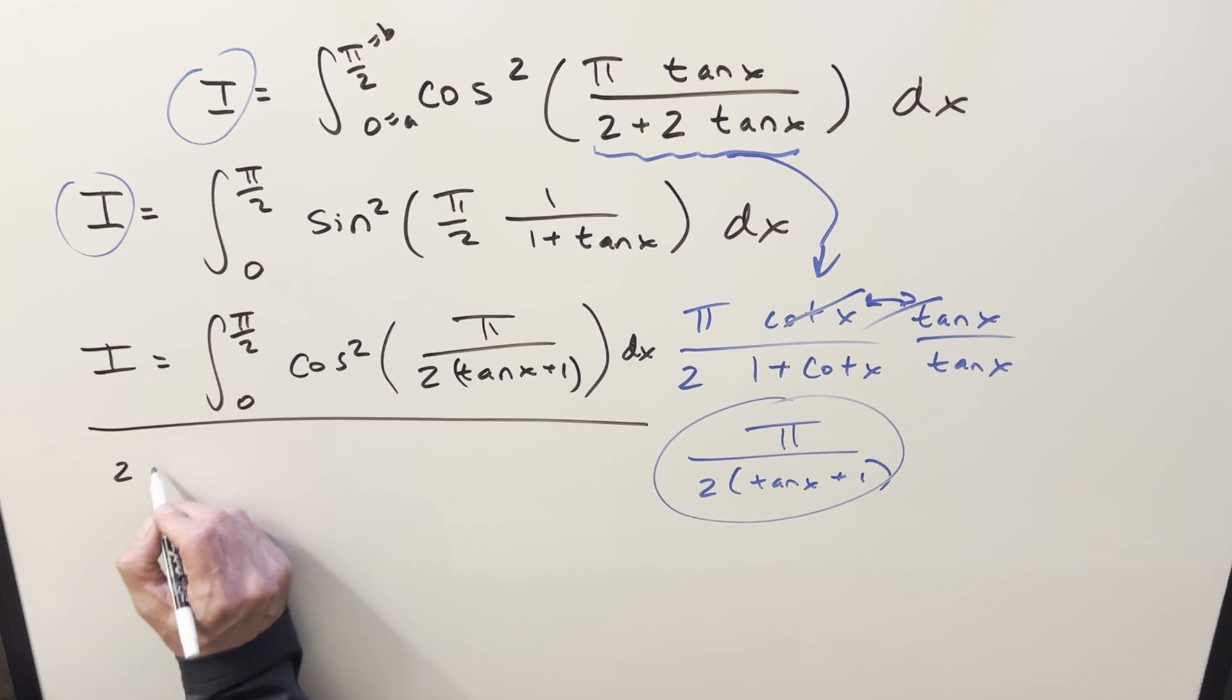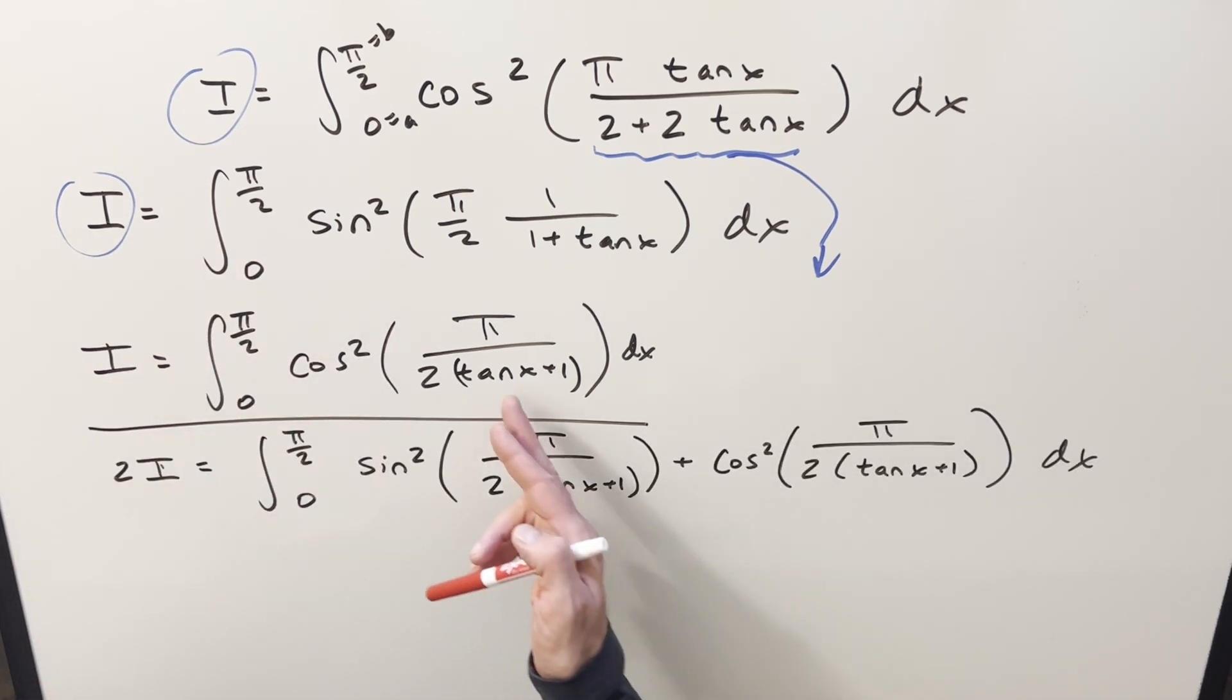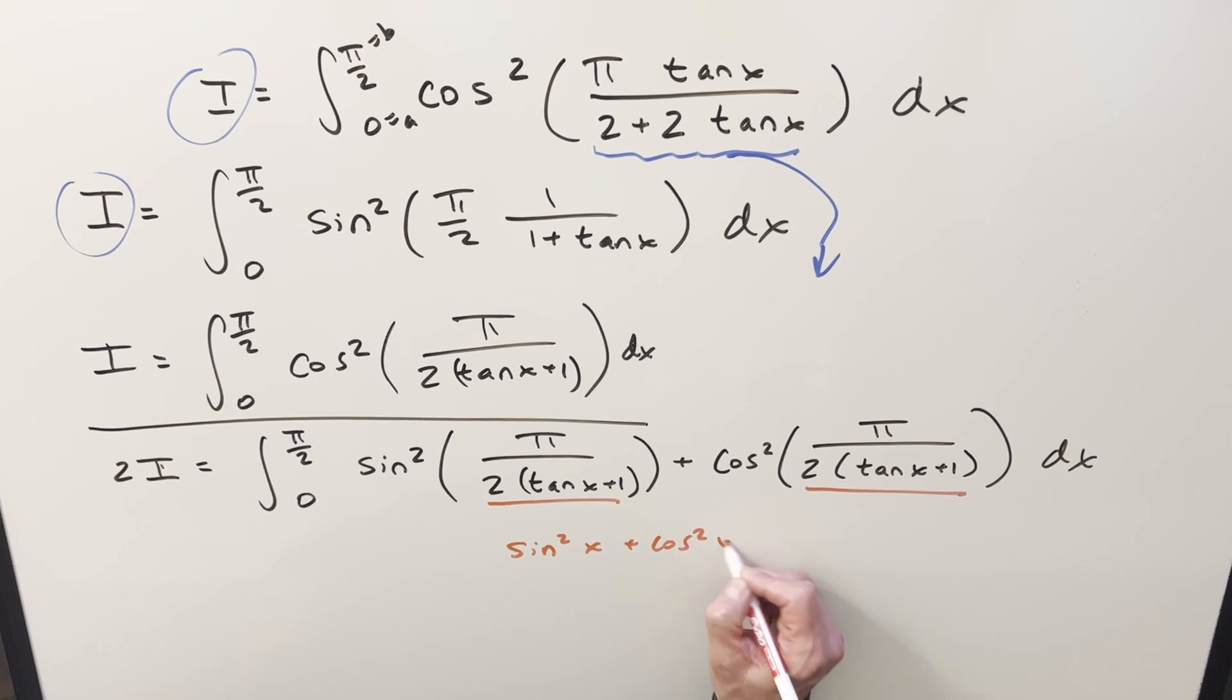Doing that, we're going to get two copies of the integral, or 2i. When we add these together, we've got the same bounds, and we can kind of just add these two terms. And let's see what we have. And now here, all I did was reorder the inputs on these, just to make it clear that both these are the same. We've got the same angle, the same input on the sine and cosines. So this is actually just the same thing as sine squared x plus cosine squared x, and that's just equal to 1.